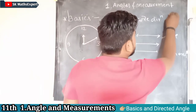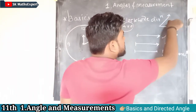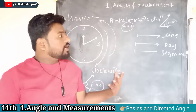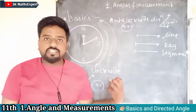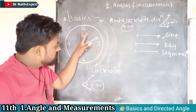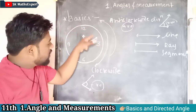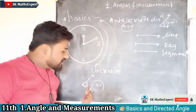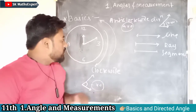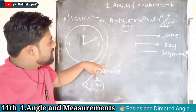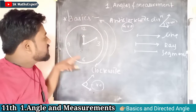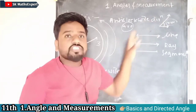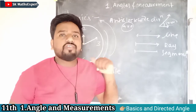Remember these two things: in clockwise direction, angle must be negative; in anti-clockwise direction, angle must be positive. For example, if these are two rays — this is the hour hand and this is the minute hand — and the rotation is anti-clockwise, then the angle between them must be positive. This is the basic concept about direction.